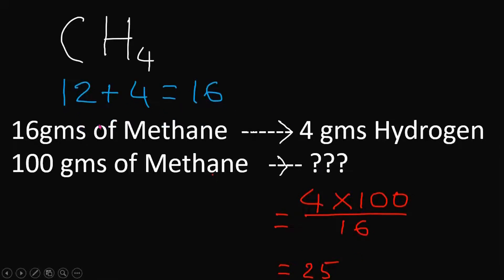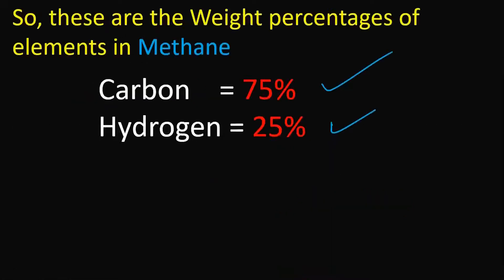Looking at the formula, the molecular weight is 16. 16 grams of methane has 4 grams of hydrogen. So 100 grams of methane has: 4 × 100 ÷ 16 = 25. Therefore, the percentage composition of carbon and hydrogen in methane are 75 and 25, respectively.